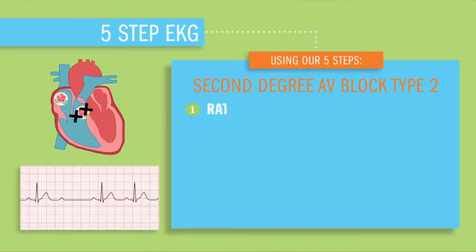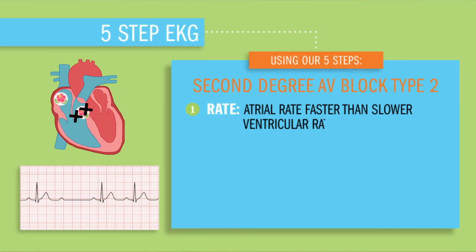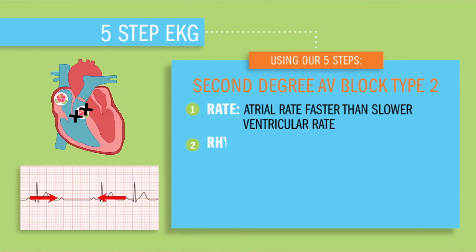Step one: the atrial rate is going to be faster than that ventricular rate, so you'll basically have more P waves than QRSs. Step two: the rhythm will be irregular — measuring from our R to R peaks, they won't be even.